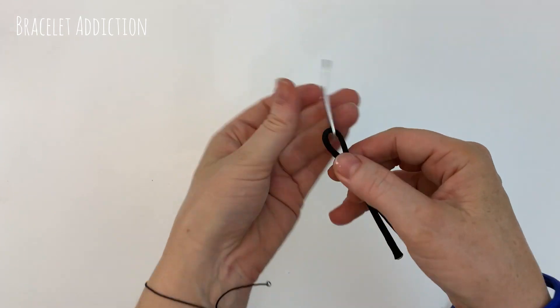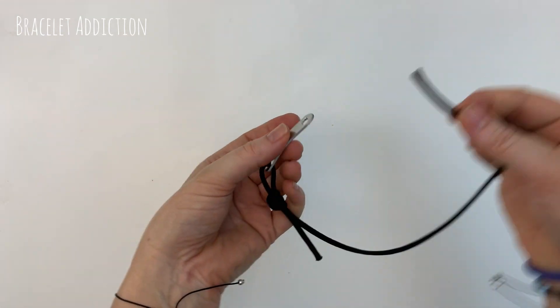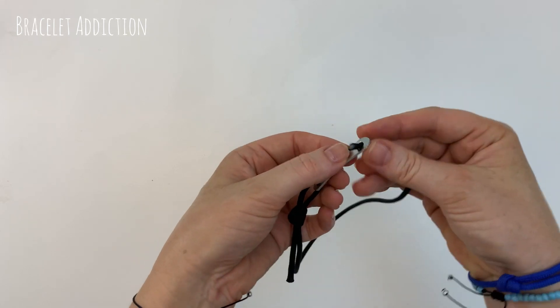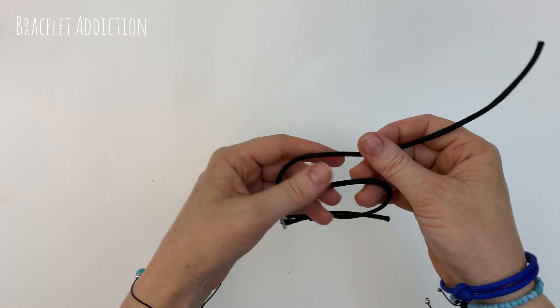Now we're going to repeat the same process on the opposite side. So bringing our cord around and threading it up the other hole on the bar. Making sure we've got a little bit of length on this cord here.